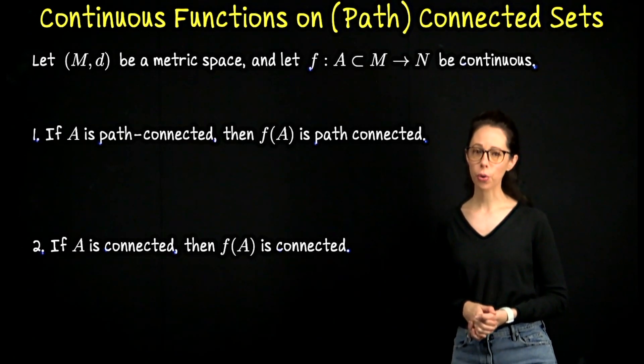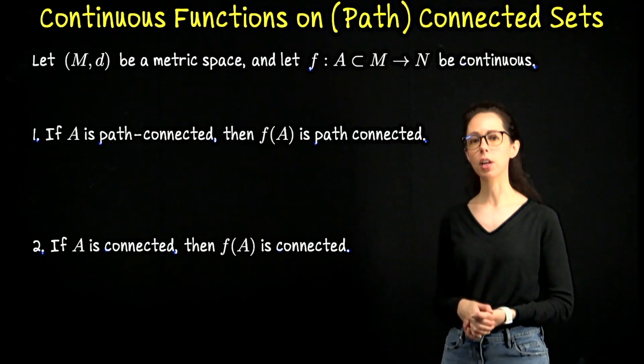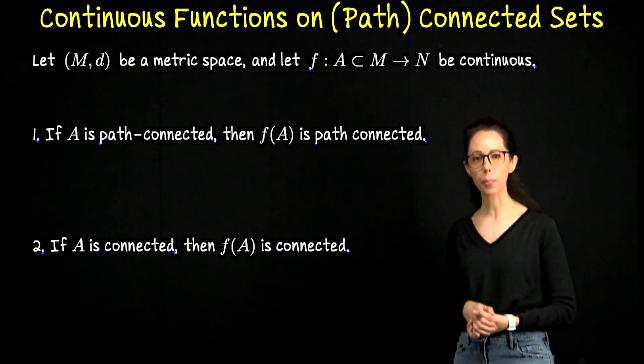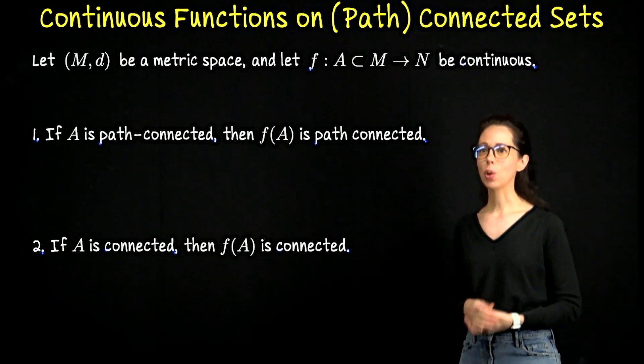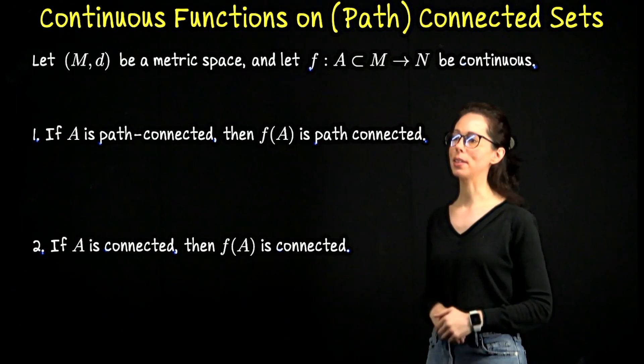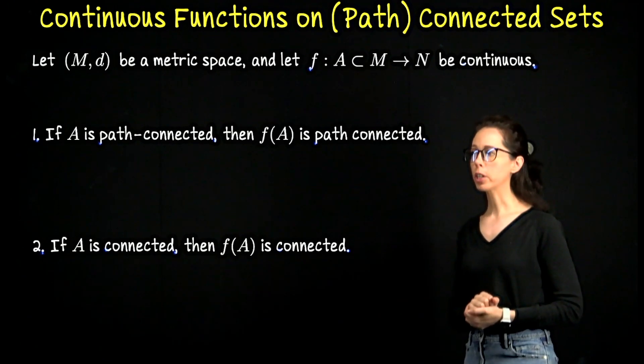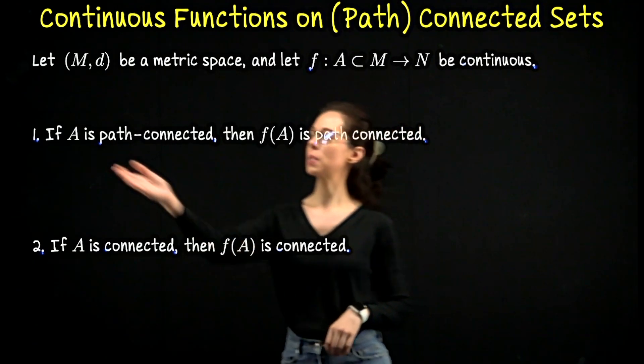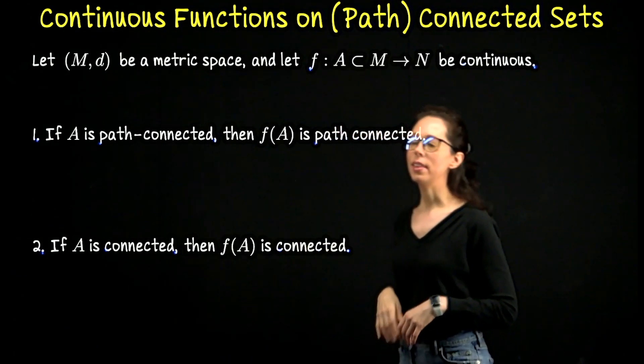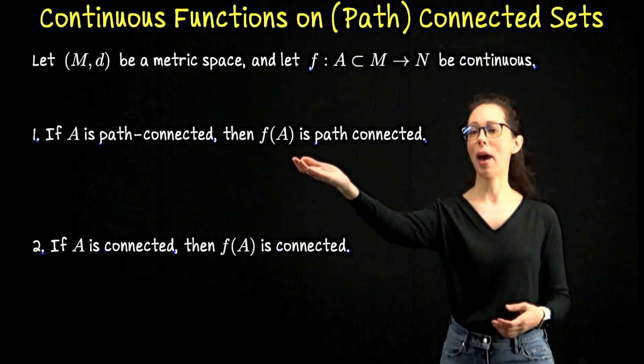The goal of this video is to go through two more examples of a continuous function preserving a topological property about the domain. In particular, we will first prove with a direct proof that if the domain is path connected, then the image f of A is also path connected.